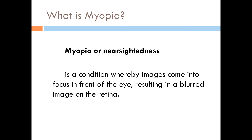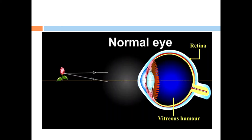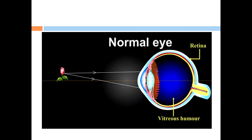First we need to ask: what is myopia or nearsightedness? It is a condition whereby images come into focus in front of the eye, resulting in a blurred image on the retina. When a normal eye tries to perceive an image, the ray of light passes through the eye and is situated onto the retina — the area that receives light and converts it into neural signals so the brain can interpret what the person is looking at.